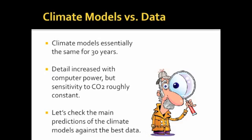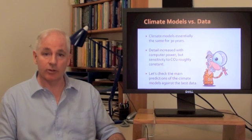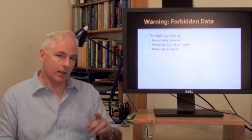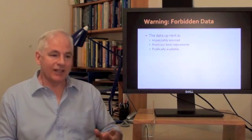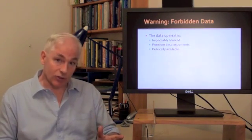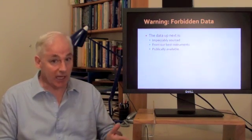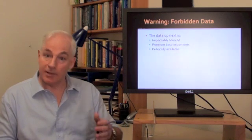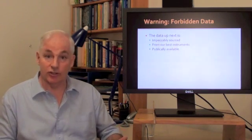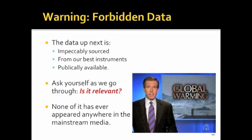What we're going to do is simply check the main predictions of the climate models against the best data we have. We're going to go empirical. Here's a warning. The data up next is impeccably sourced, mainly from NASA. It's from our best instruments, largely from satellites and the Argo program. It's publicly available. You can download it yourself. And you've got to ask yourself as you go through this, is this data relevant? Because the mainstream news media have never published any of this data anywhere, ever.